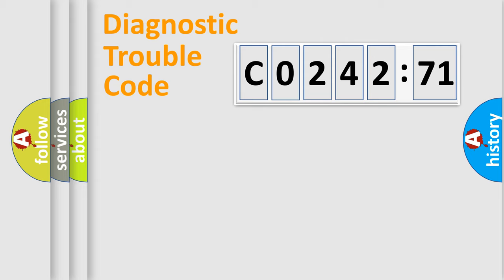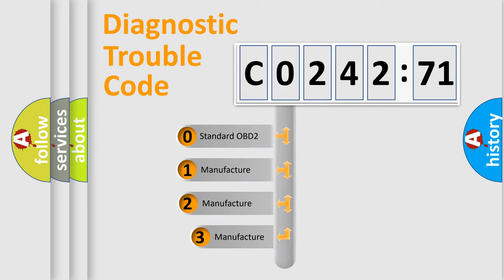Powertrain, Body, Chassis, Network. This distribution is defined in the first character code.